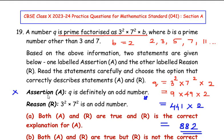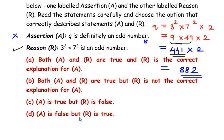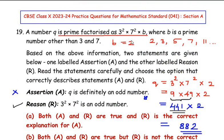Now let's check if the Reason is true: 3² × 7² is an odd number. We have 3² = 9 and 7² = 49, and 9 × 49 = 441, which is an odd number. So the Reason is true. Therefore we select option D: the Assertion is false but the Reason is true. Remember, if such questions come, note that prime numbers start with 2 and substitute values to check.